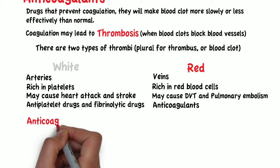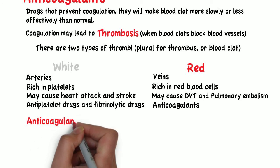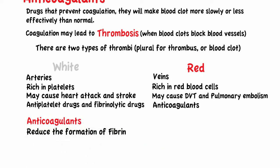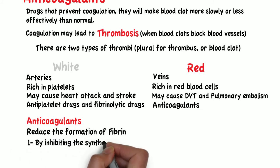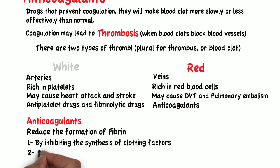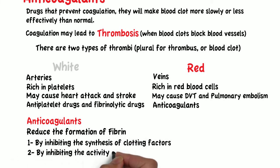The primary goal of anticoagulants is to reduce the formation of fibrin, and they can do that by two main mechanisms: one, by inhibiting the synthesis of clotting factors, or two, by inhibiting the activity of clotting factors.